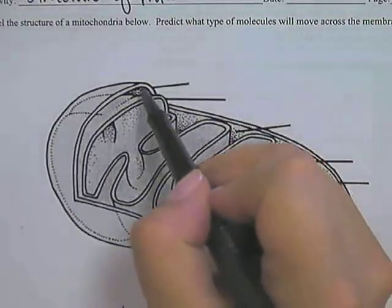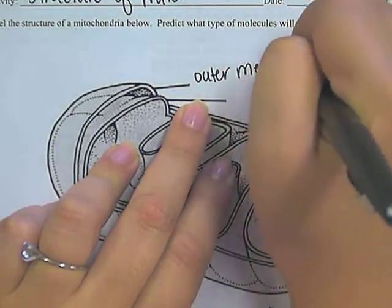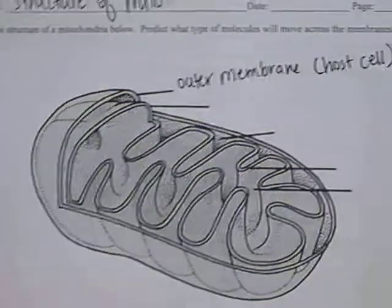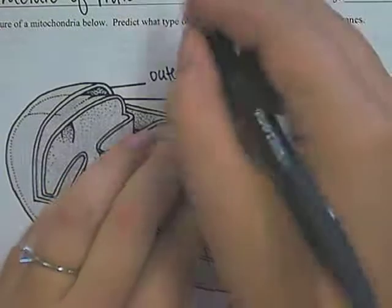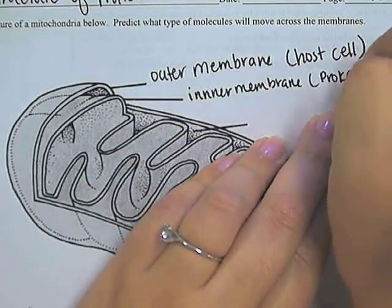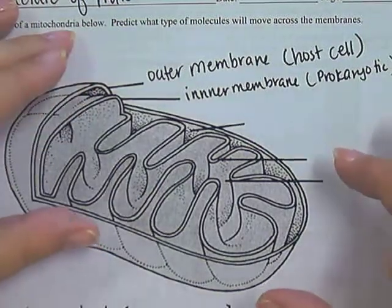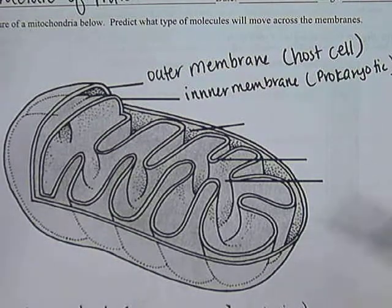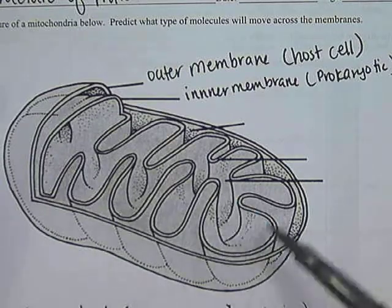Now we're going to look at that structure in more depth. This part out here is the outer membrane of the mitochondria — the one that comes from the host cell. The mitochondria itself, believed to have been a prokaryote, had its own membrane, and we call that the inner membrane — this is the one from the prokaryote. That inner membrane is enclosed in an outer membrane that is smaller than the original prokaryote, so the inner membrane is all folded up, which is what these lines here represent.